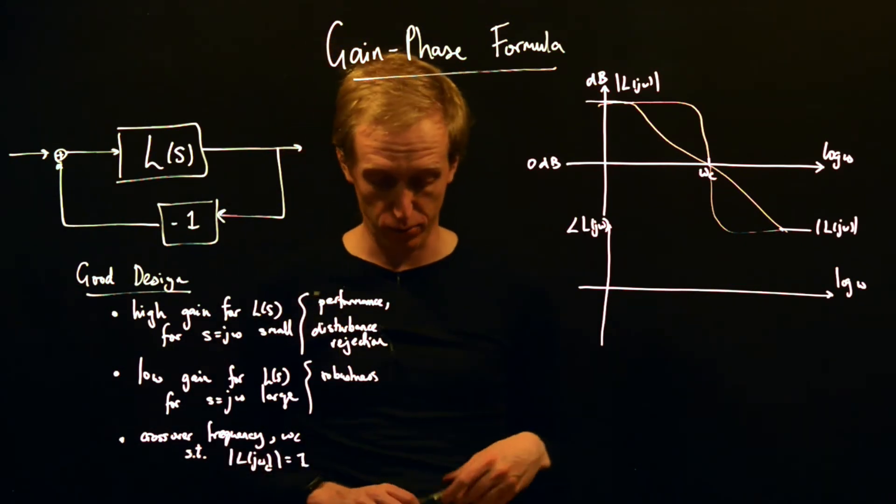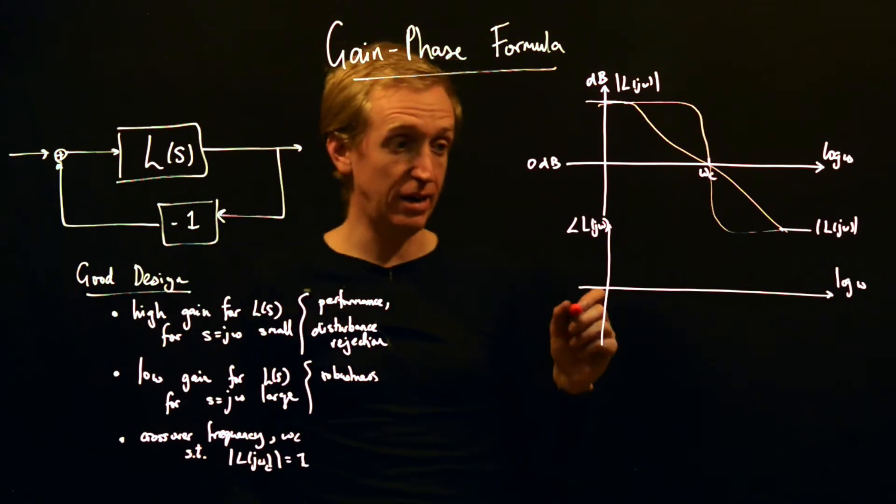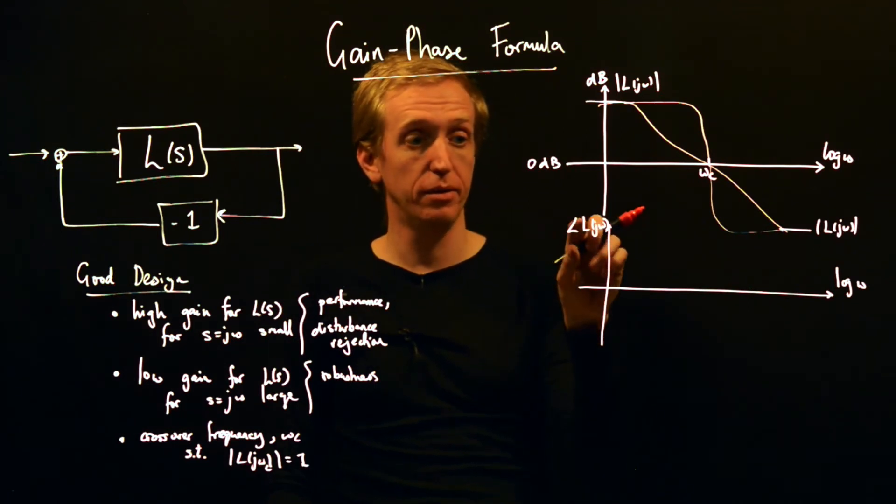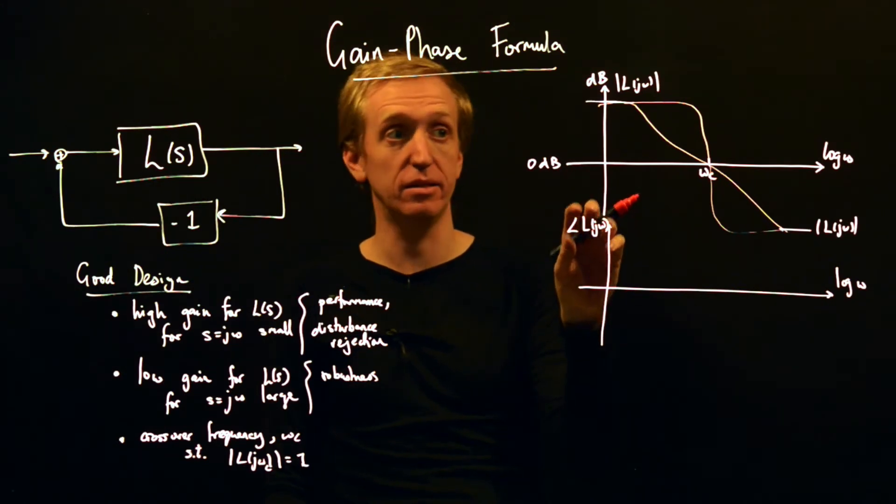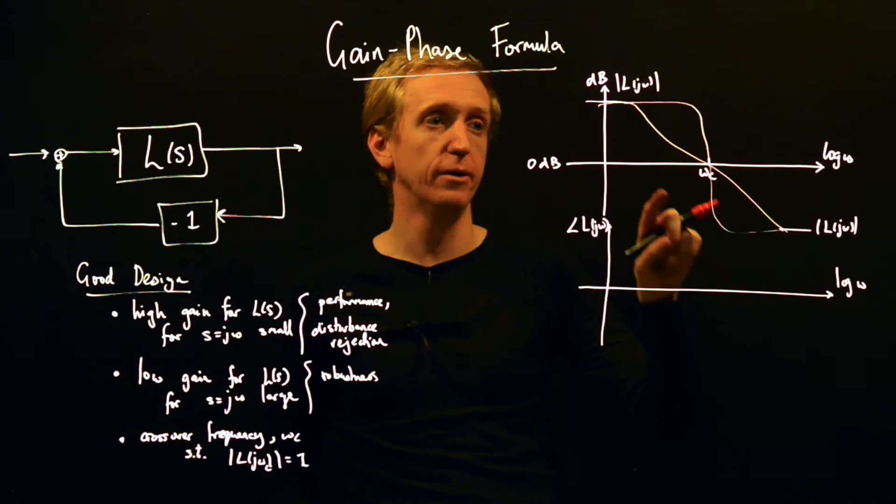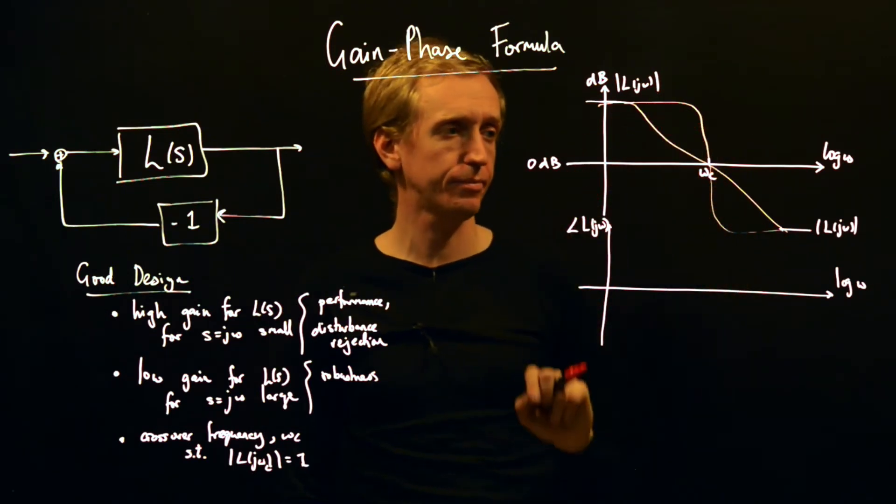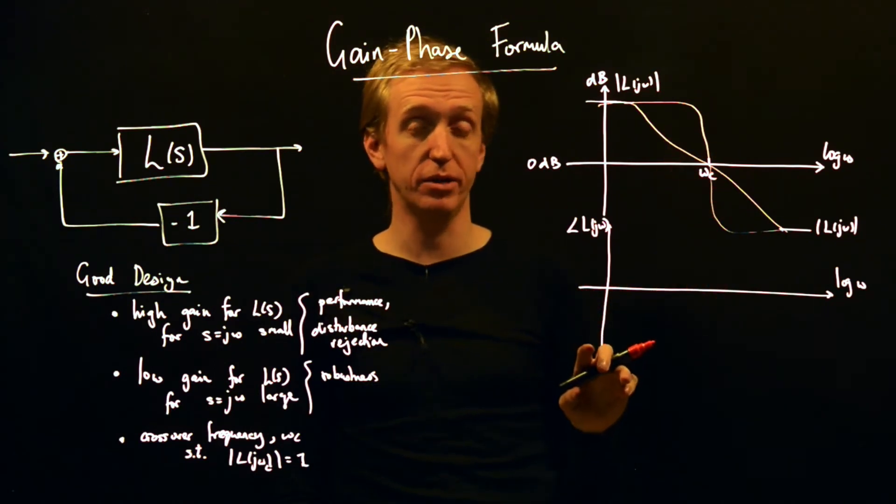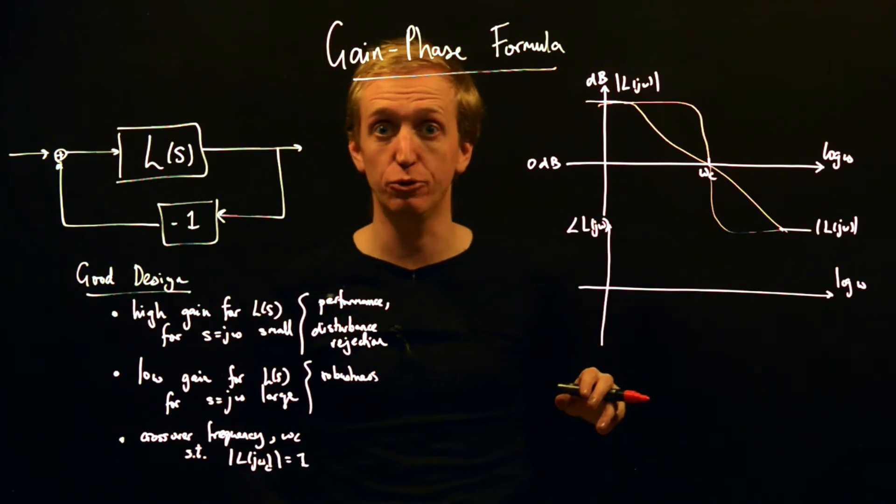Well this might seem unlikely to work, and indeed it won't work. One explanation for what goes wrong comes through this gain-phase formula. What the formula does is it gives a connection between the argument of L(s) and the magnitude of that function - it shows that the two are related. The reason this won't work is that this period of rapid transition in the magnitude will necessarily cause a period of rapid transition in the argument as well. This will have the effect of essentially forcing us to encircle the minus one point and introduce instability.